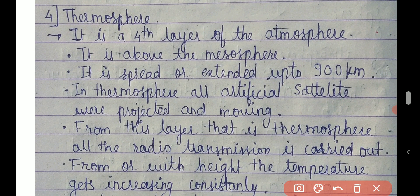Now the next layer is thermosphere — it is the fourth layer of the atmosphere. First layer is troposphere, then stratosphere, then mesosphere, and now thermosphere. It is above the mesosphere and is spread or extended up to 900 kilometers.